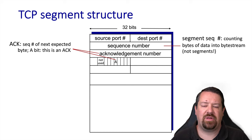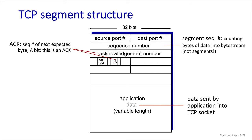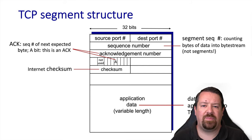TCP also has a number of individual flags, one of which is the ACK bit, which designates if this segment is acknowledging data. The payload for the TCP segment is the application data. Another thing it has in common with UDP is an Internet checksum — 16 bits long and computed in the same way as we saw for UDP.